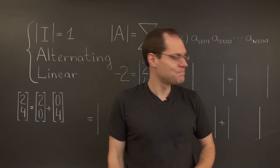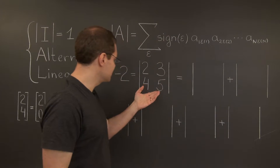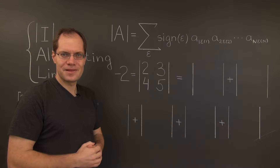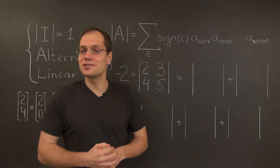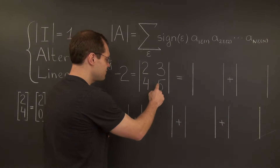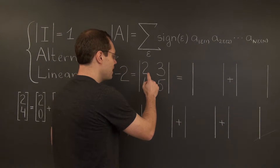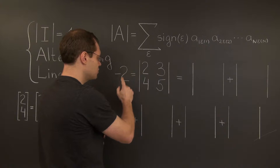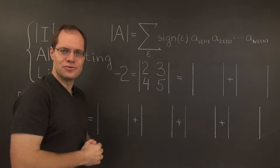Let's consider this 2×2 determinant. It equals 2 times 5 minus 4 times 3, which is minus 2.